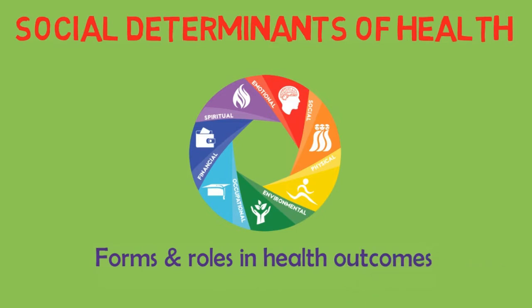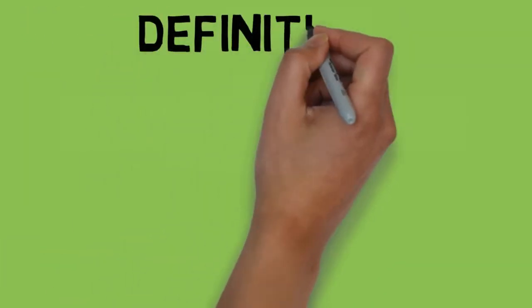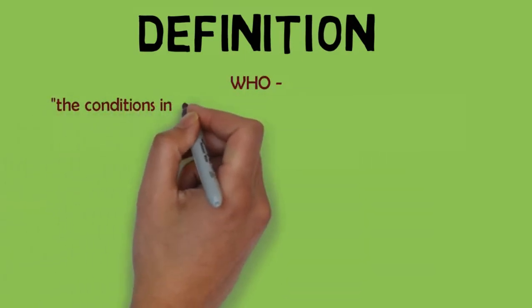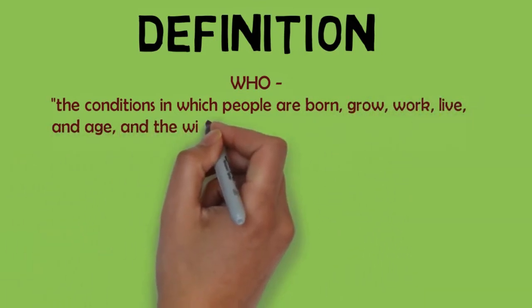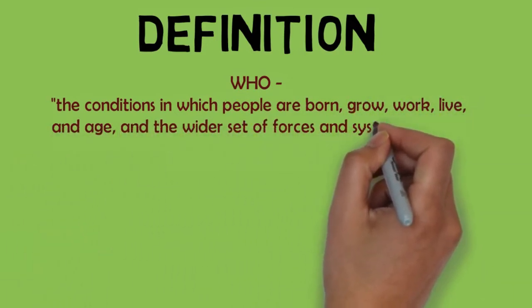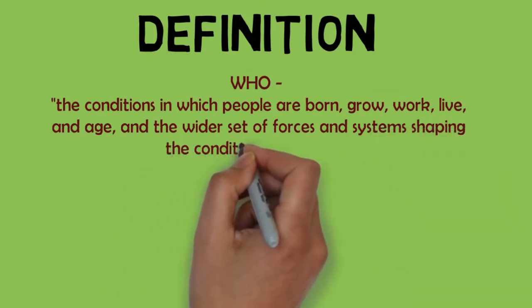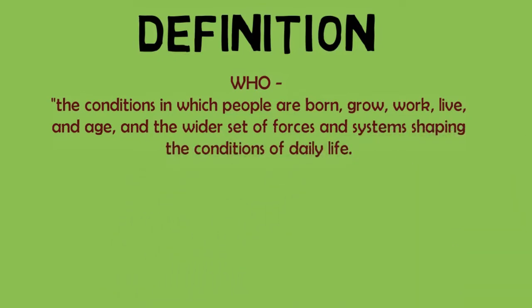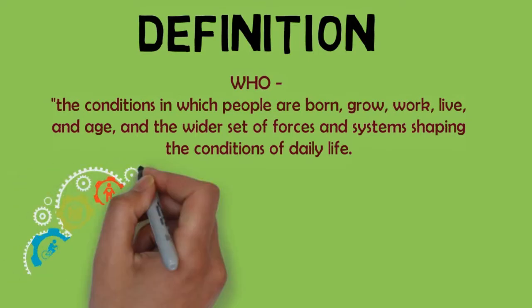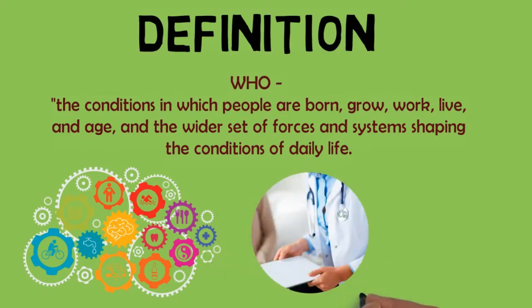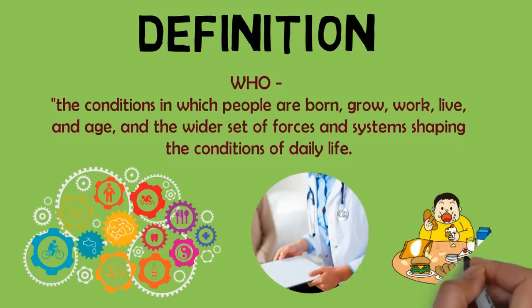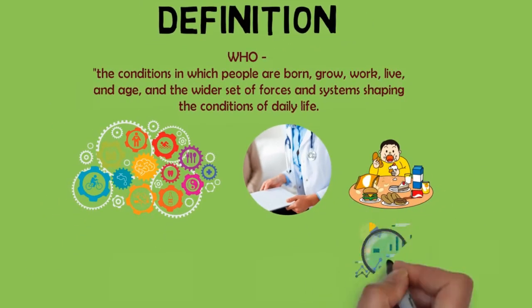Firstly, what are social determinants of health? The World Health Organization defines social determinants of health as the conditions in which people are born, grow, work, live, and age, and the wider set of forces and systems shaping the conditions of daily life. Social determinants of health encompass an extensive range of factors that exist throughout all aspects of society, however they are separate from medical care or a person's individual lifestyle choices.